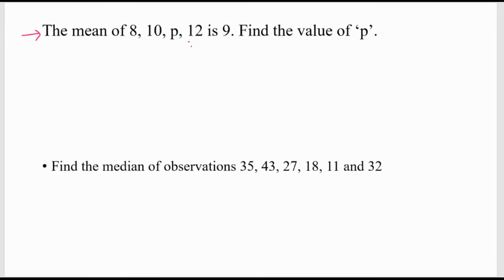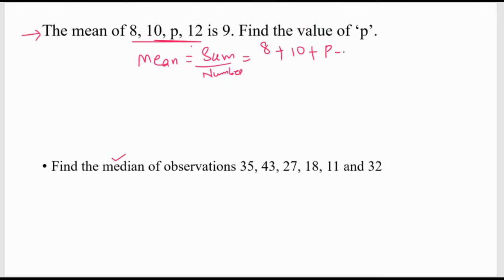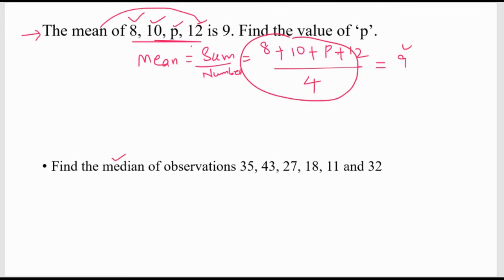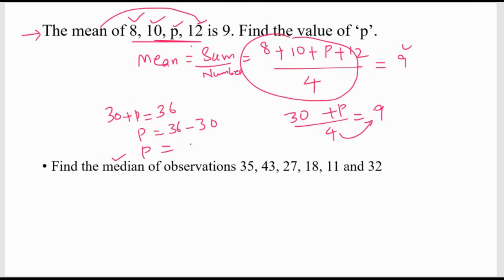Statistics: mean of 8, 10, P, 12 is 9. Mean formula equals sum of observations divided by number of observations. Sum means addition of all observations: 8 plus 10 plus P plus 12, divided by number of observations which is 4, equals 9. 8 plus 10 is 18, plus 12 is 30, plus P. 30 plus P divided by 4 equals 9. Cross-multiplying: 30 plus P equals 36. Therefore P equals 36 minus 30, which is 6. The value of P is 6.